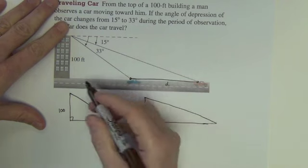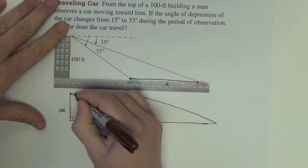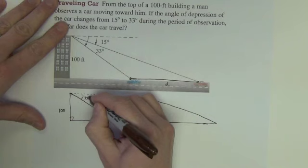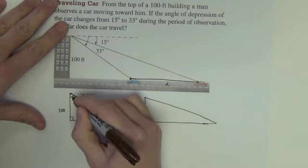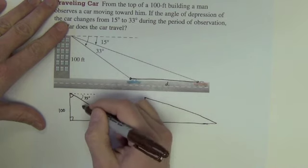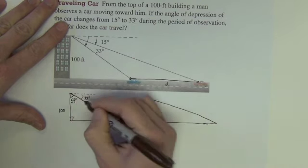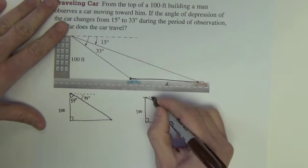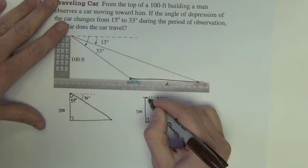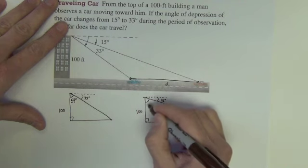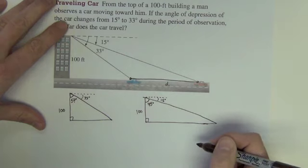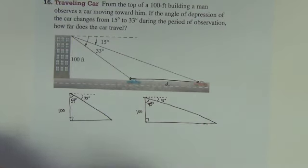The building is 100 feet. The angles of depression, let's see, this angle is 33 degrees. So this one is the difference between 90 and 33 degrees. This angle would be 57. This angle of depression here was 15 degrees. So this one would be the difference between 90 and 15, which is 75 degrees.